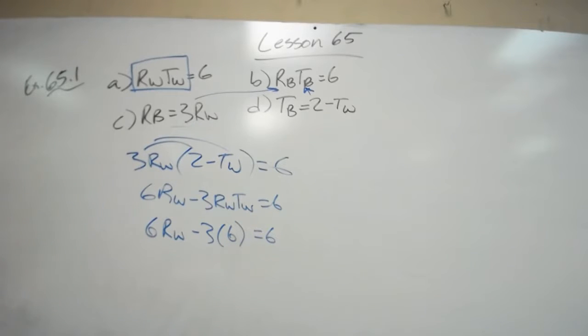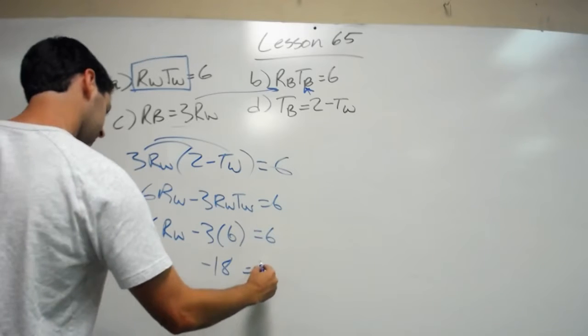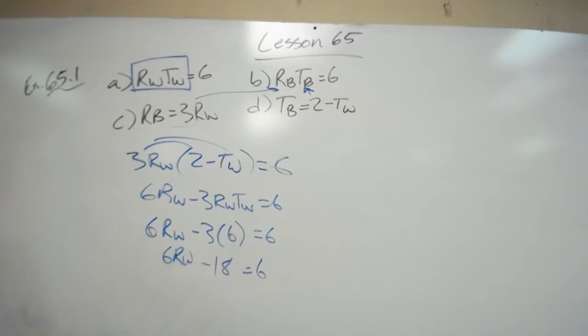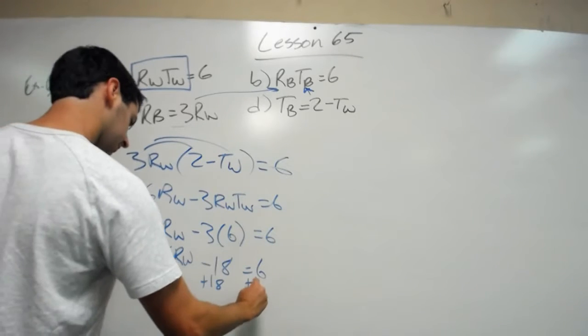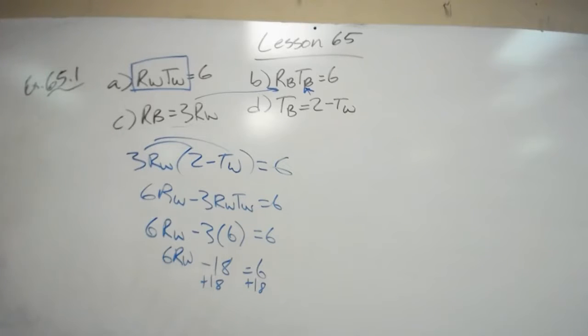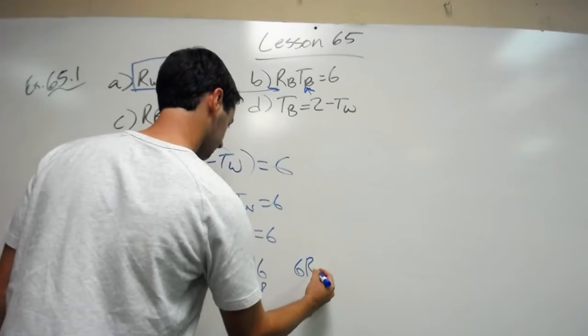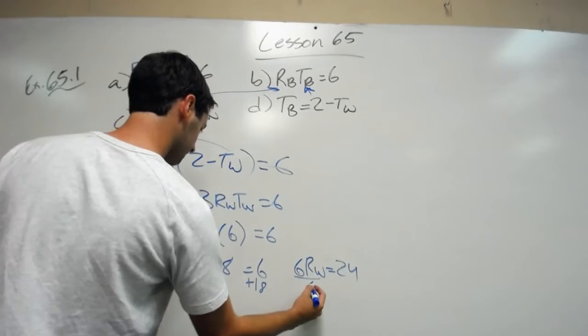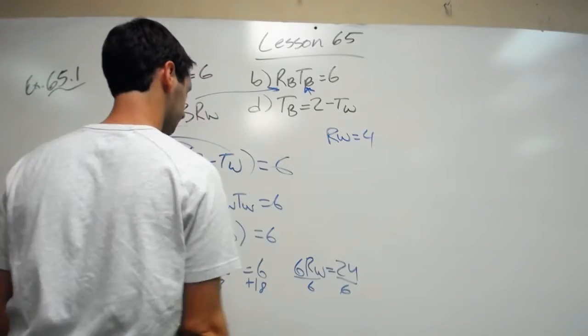And that's all advanced substitution is. From here, you've got it easy peasy. 6rw minus 18 equals 6. Add 18 to both sides. 24 equals 6rw. Divide by 6. rw equals 4.